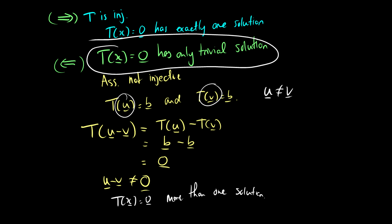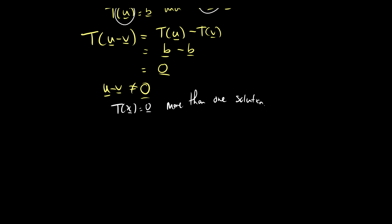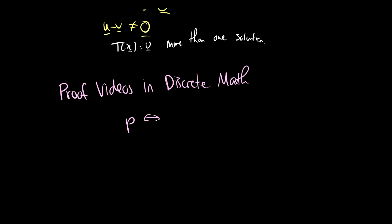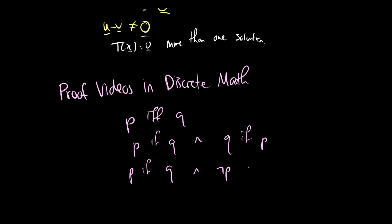We took the contrapositive of the first direction. If you didn't quite understand why this proof works, check out the proof videos in my discrete math series. For a quick interlude: to prove P if and only if Q, you show P if Q and Q if P, or equivalently P if Q and not-P if not-Q — that's exactly what we did.